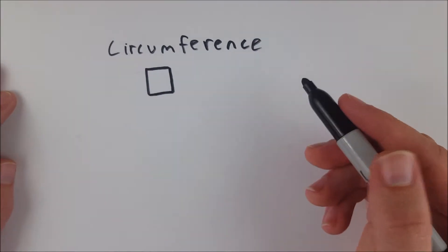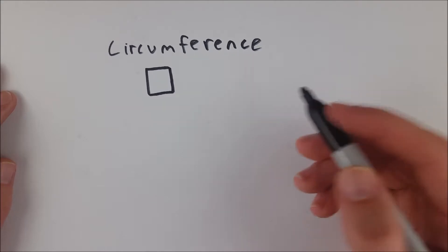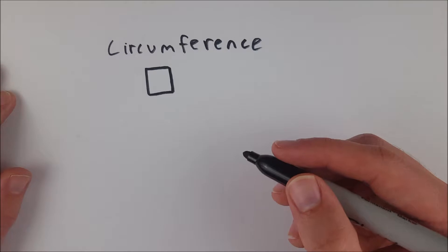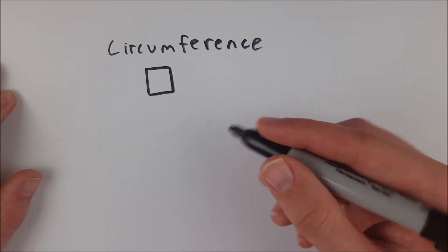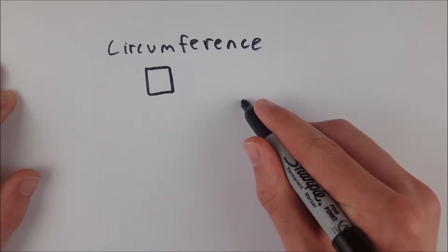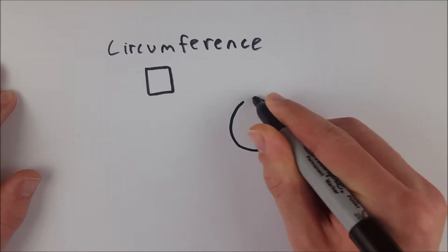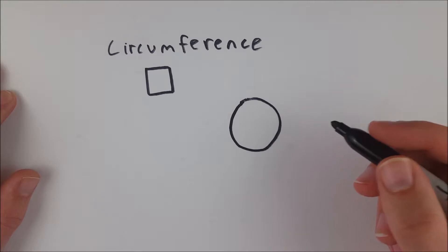Circumference is the same thing with a circle. We just have a different name for it because it's kind of different because of course it's a circle. There's no corners or anything. It's not the sum of the lengths of sides. It's just the length around the circle, the distance around the circle.